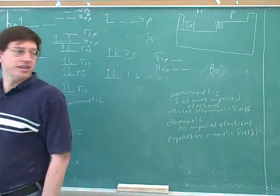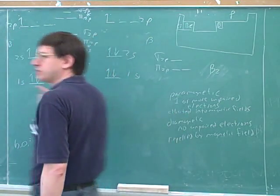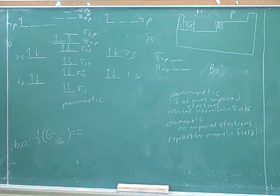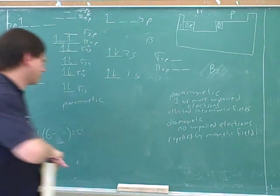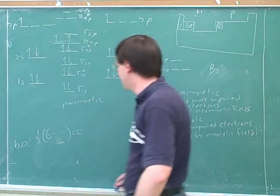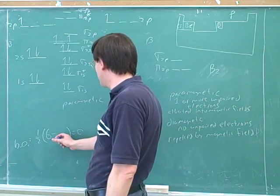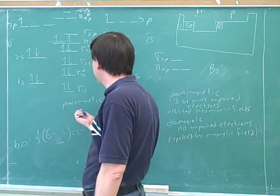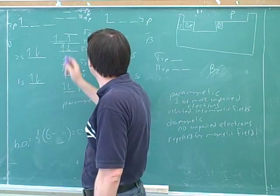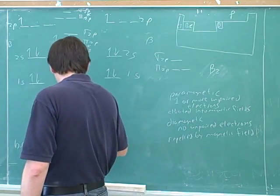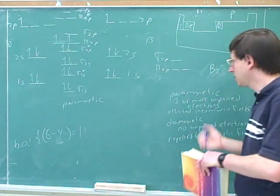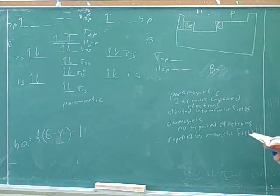And if you actually do the experiment, this is weakly attracted into a magnetic field. So that's another success for this molecular orbital theory, the fact that it predicts these unpaired electrons, which matches up with our experimental evidence. So I didn't finish the bond order. So what would be the number of anti-bonding electrons? Four. One, two, three, four. So what was the bond order? One. OK.